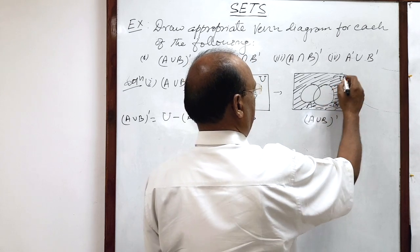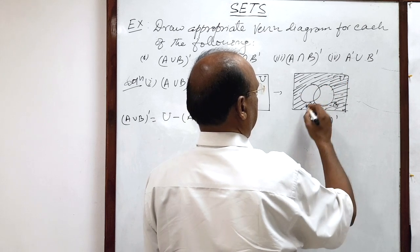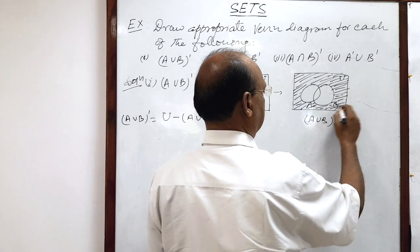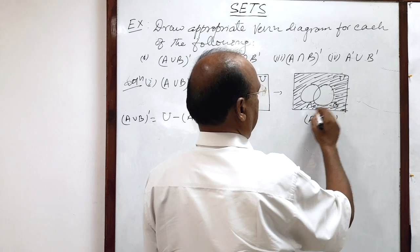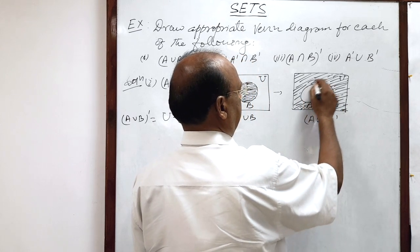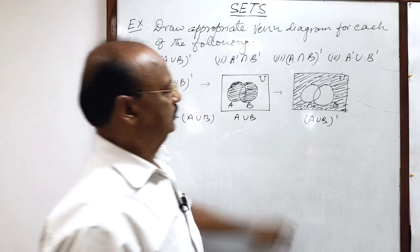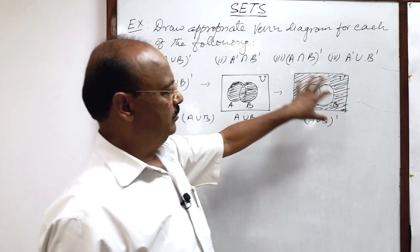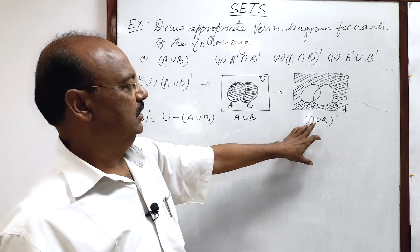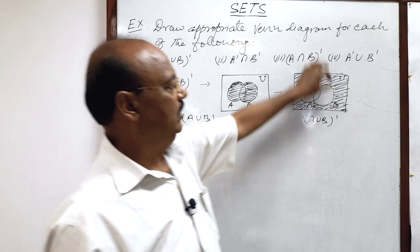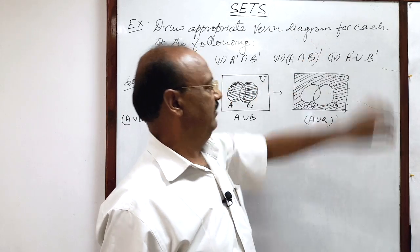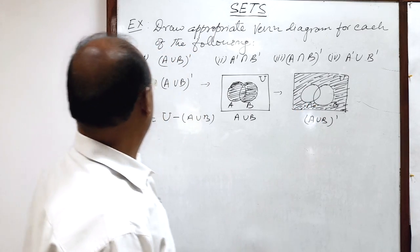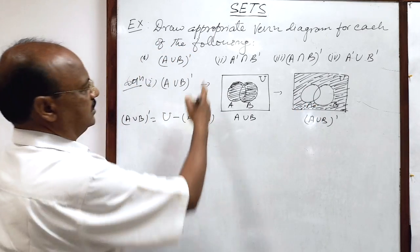You have learned in lower classes about drawing and painting, and this is very interesting like that. This shaded part is representing A union B whole complement. So, understood? Now, let us see the second part.